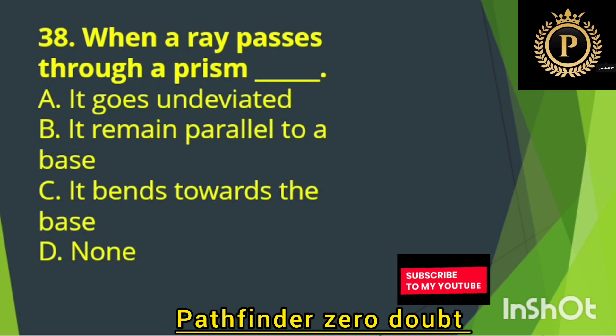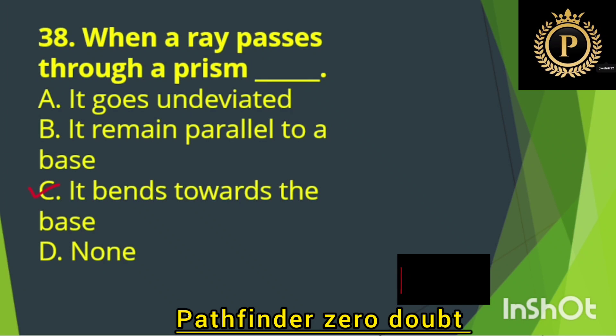When a ray passes through a prism — Option C: It bends towards the base.